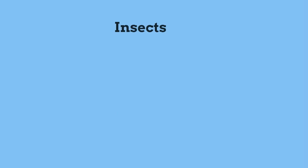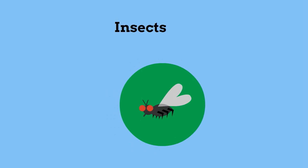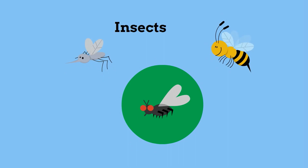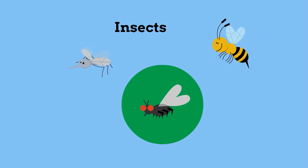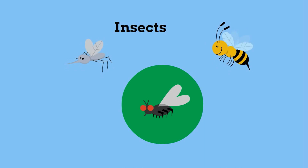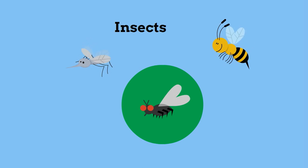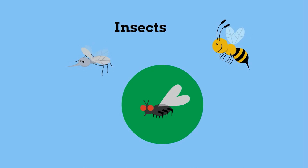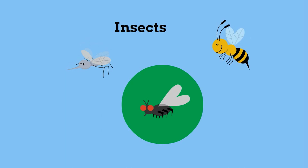Several insects like flies, dung beetles, maggots, and ants are decomposers and break down once-living organisms. Check out this dung beetle.